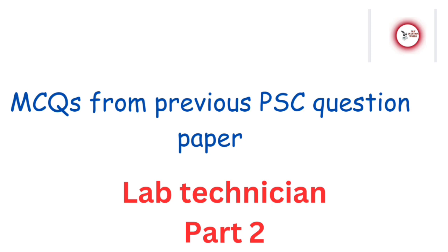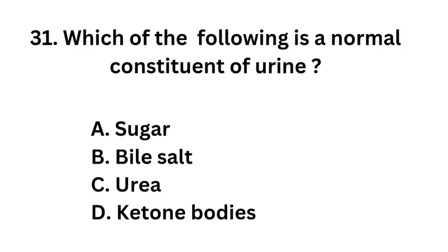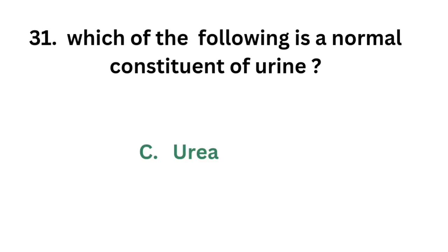Question number 31: Which of the following is a normal constituent of urine? Option A: Sugar. Option B: Bile salt. Option C: Urea. Option D: Ketone bodies. The correct answer is option C: Urea.